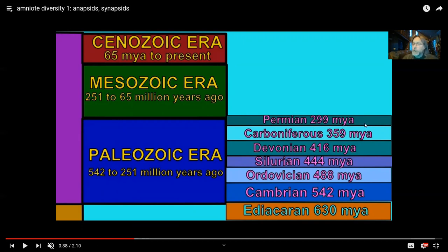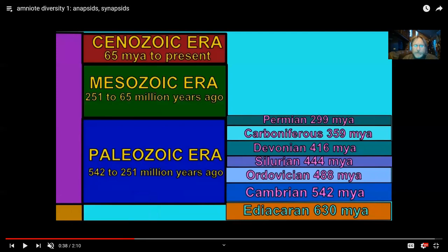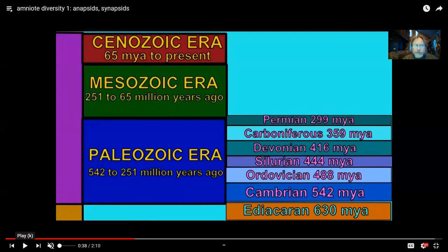This mass extinction is so significant that we use it to mark the boundary between the old life of the Paleozoic and the middle life of the Mesozoic. After the Permian extinction is over, life starts anew — there are dinosaurs, there are mammals, there are birds shortly in the aftermath of this mass Permian extinction. At that point, the anapsid reptiles are largely extinct.